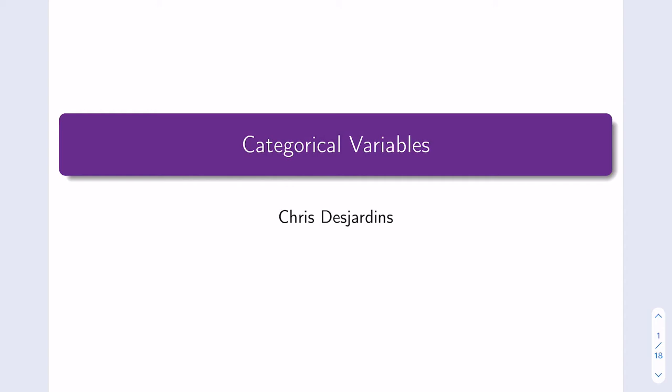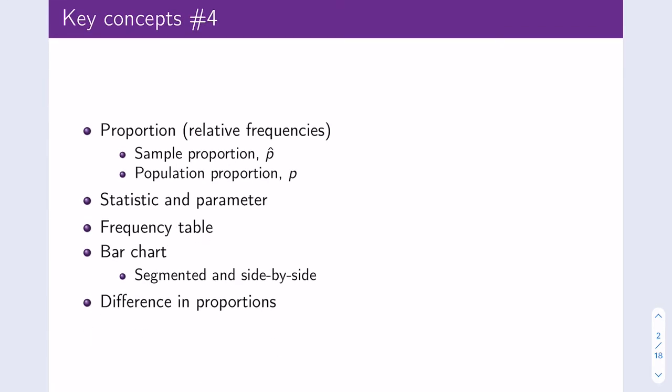Today's lecture is going to be on categorical variables, corresponding to section 2.1 in the LOC5 textbook. By the end of today's lecture, you should understand proportions and the difference between a sample proportion and a population proportion. You should also start to get some familiarity with the differences between a statistic and a parameter, be able to construct a frequency table and bar charts, and be able to calculate differences in proportions.